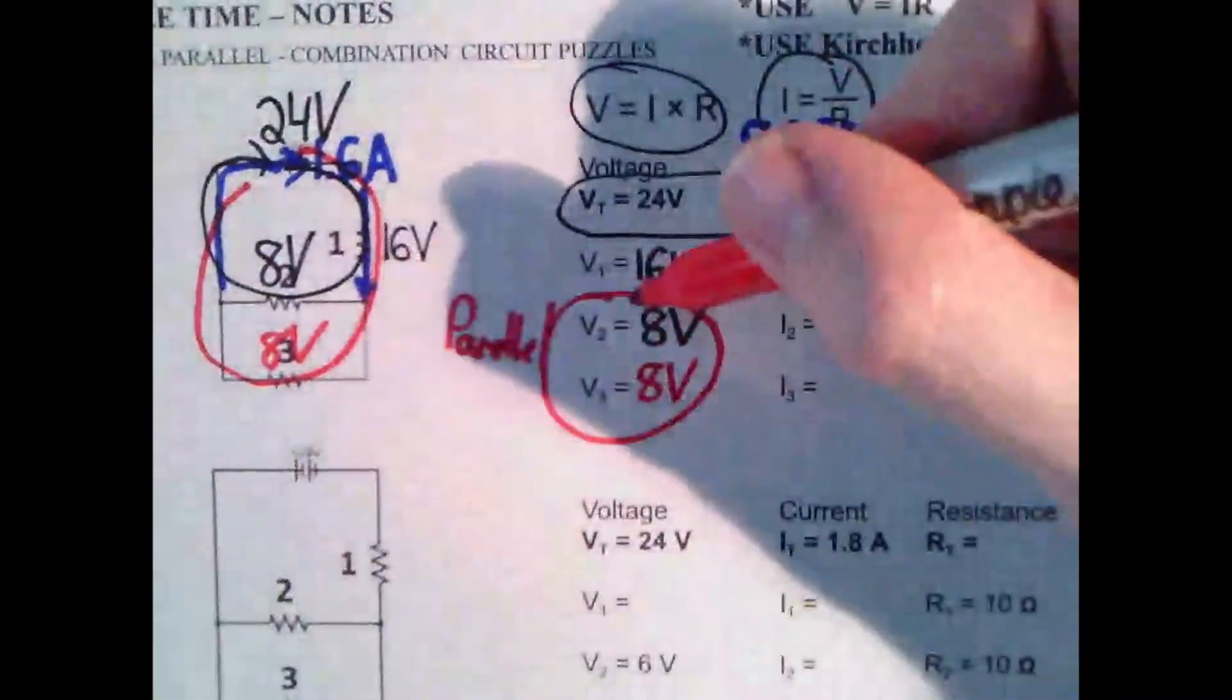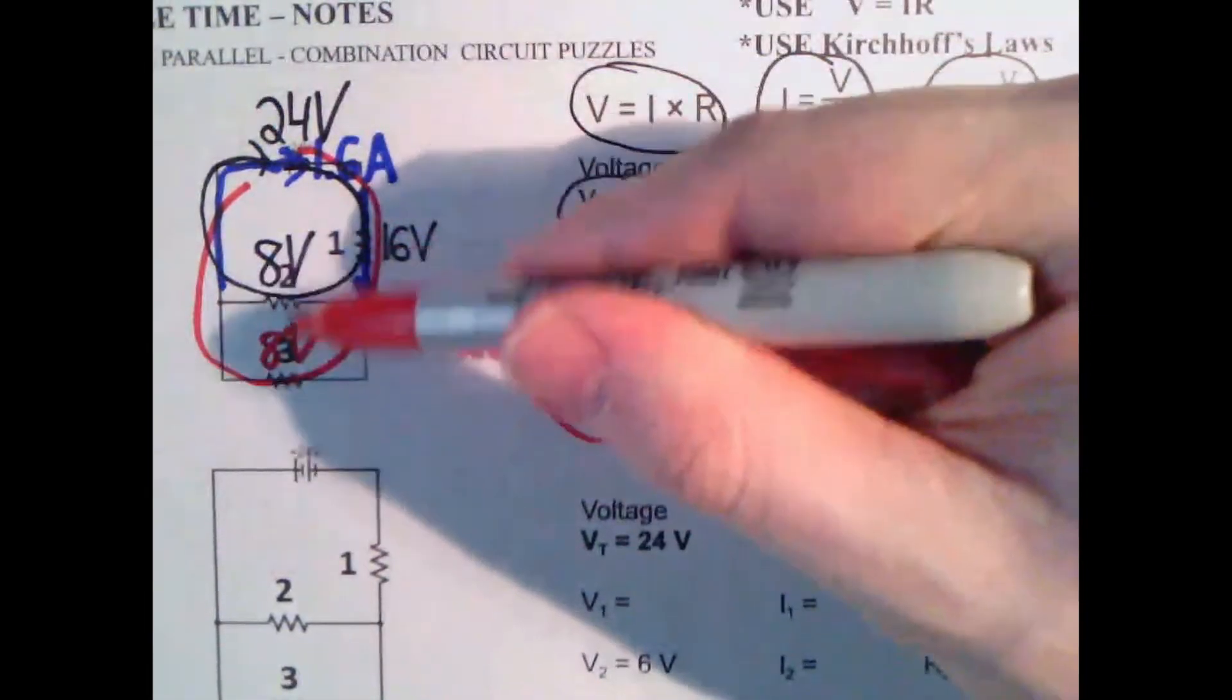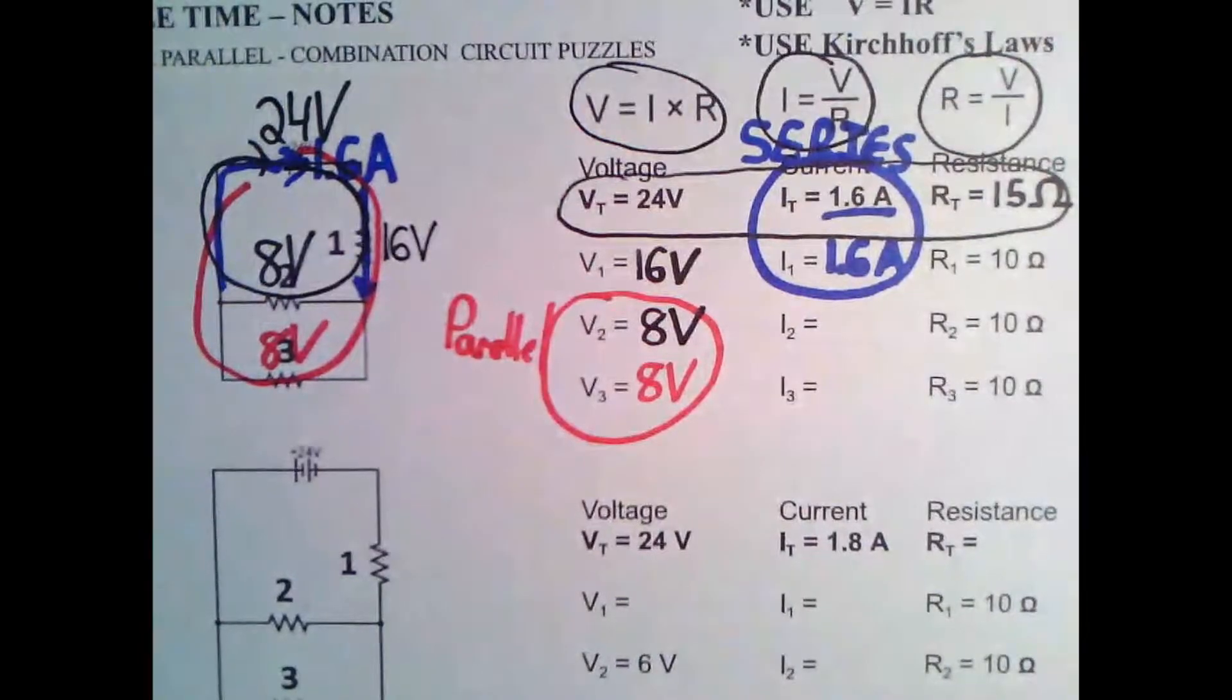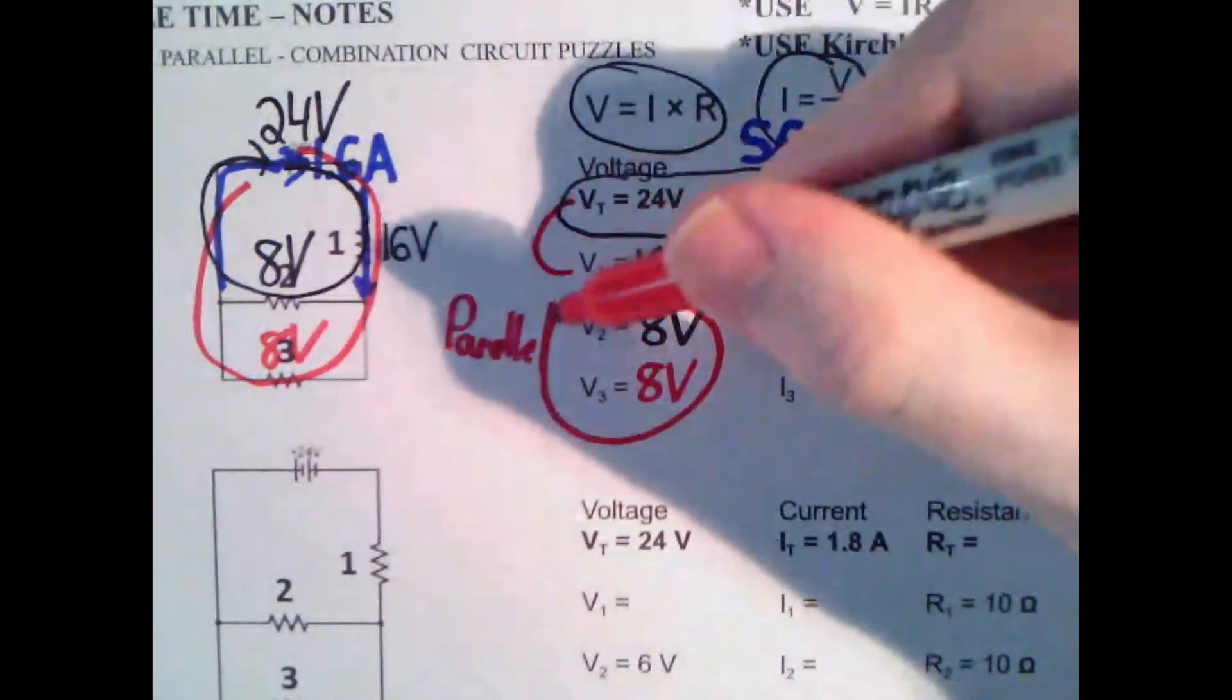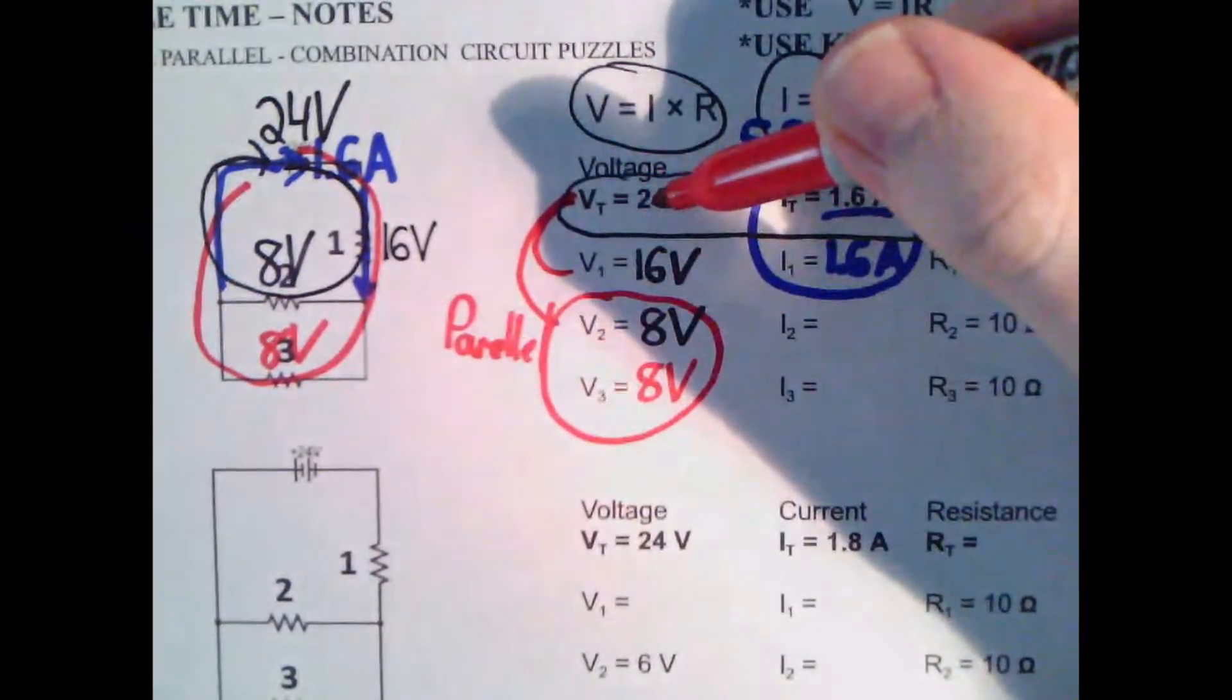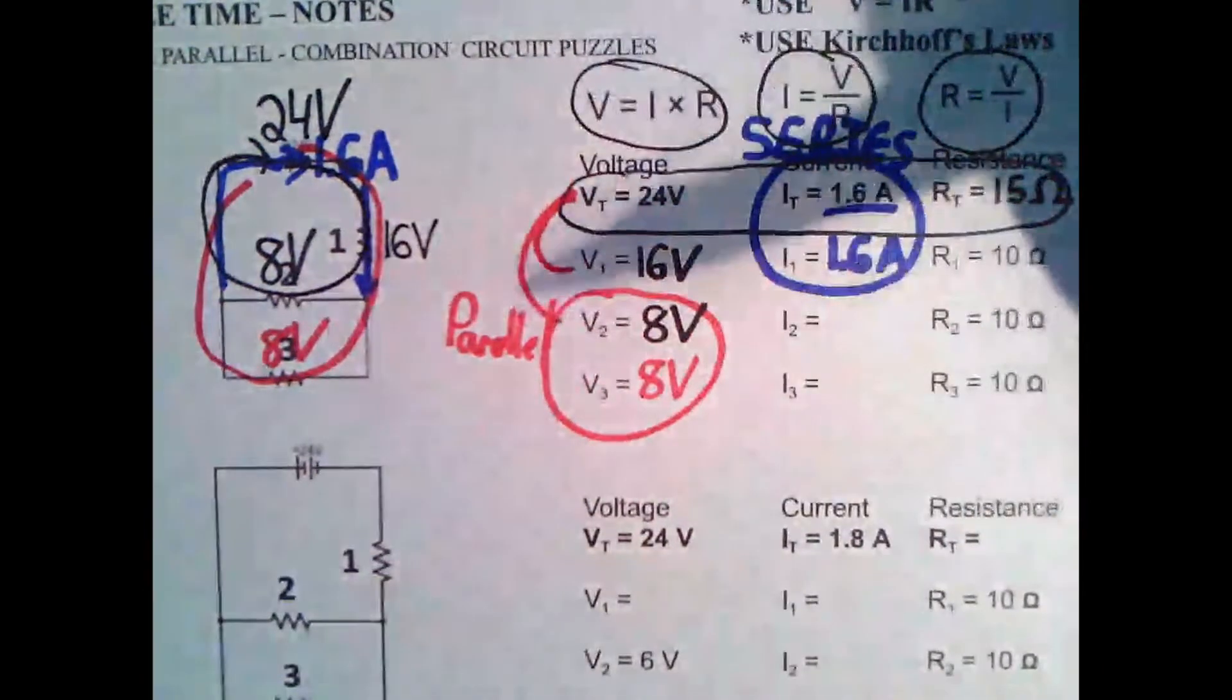It passes the test of parallel always being the same. So 8 volts, 8 volts, right? These are in parallel with each other. They're both getting 8 volts. It also passes the series test, which means that this and this added together, 16 and 8 have to be 24. So it passes kind of both tests, if you will.